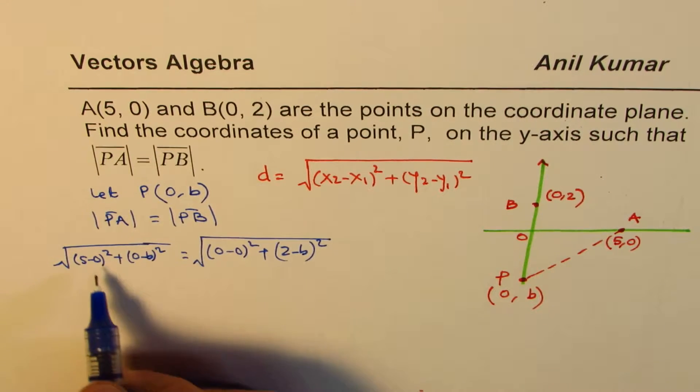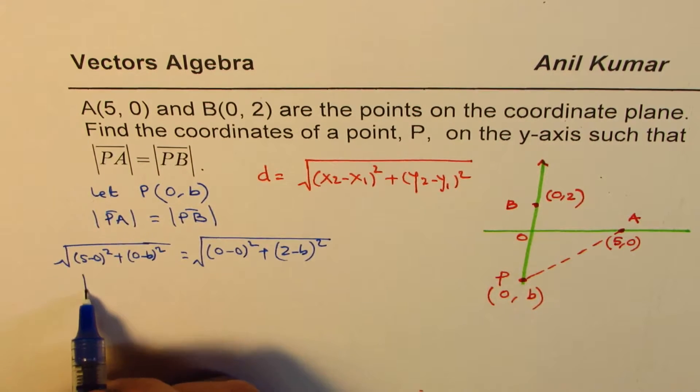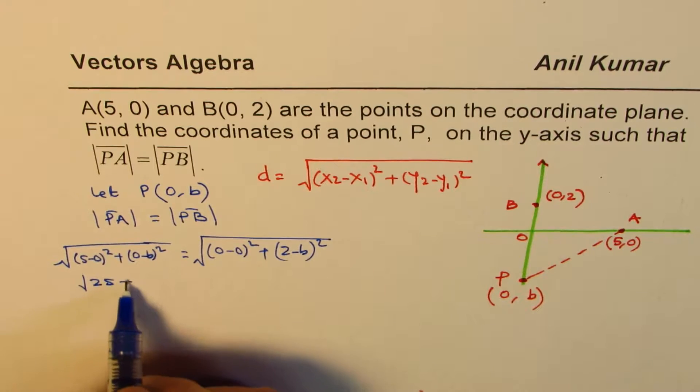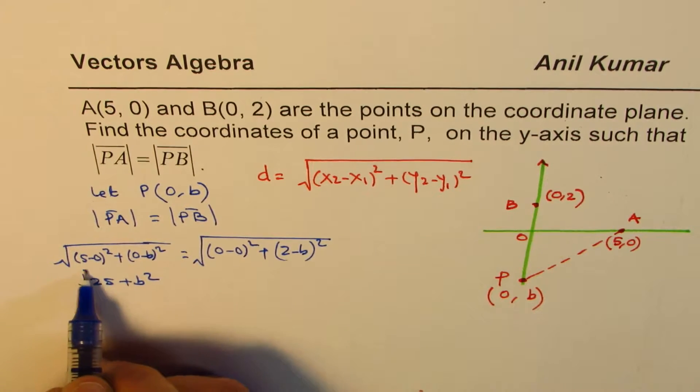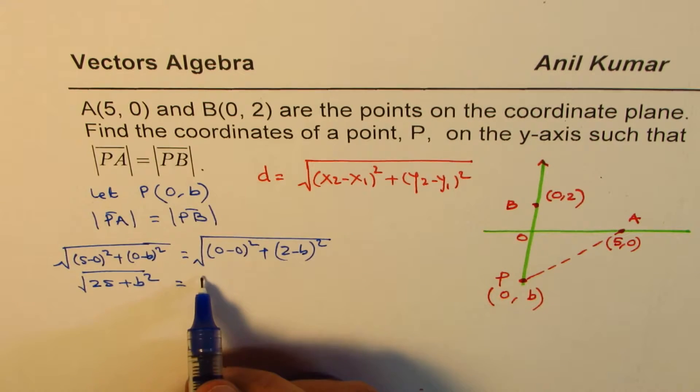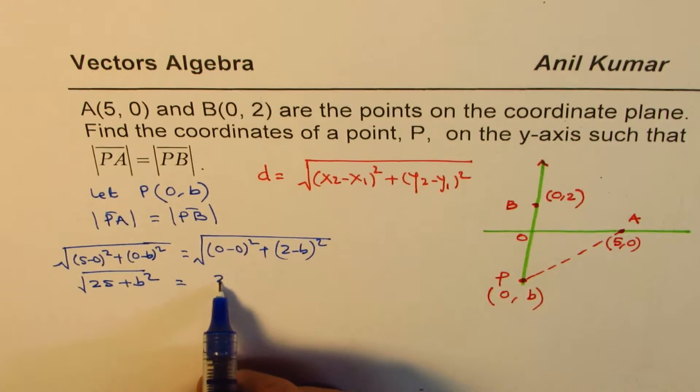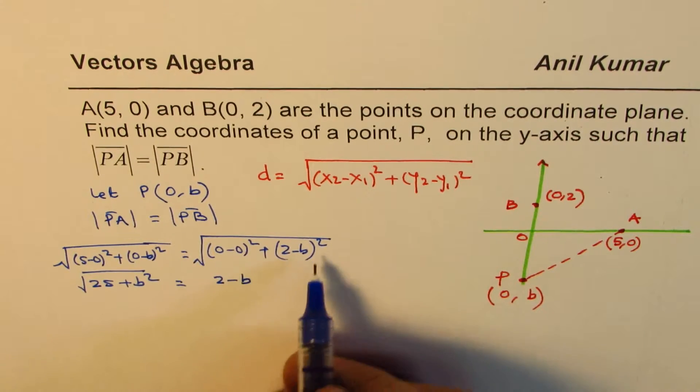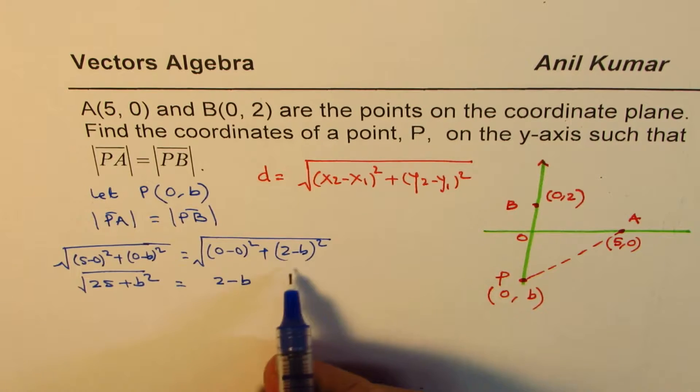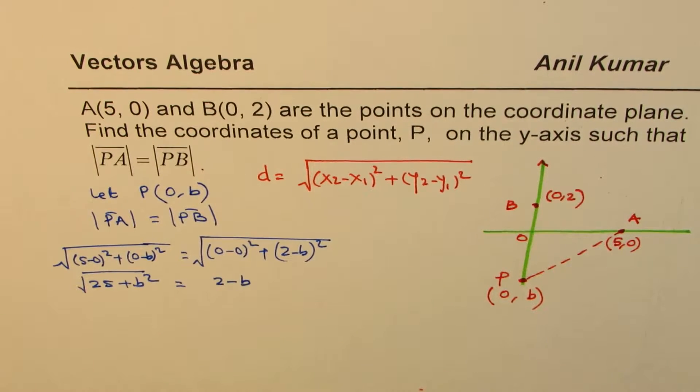This gives us 5 square, so within square root we have 25 + b². On this side, we have √[(2-b)²], that gives me 2 minus b. So when you do square root, it just gets 2 minus b.